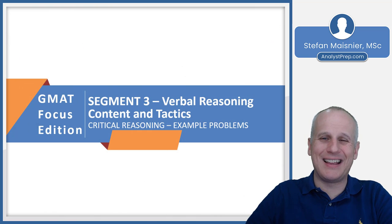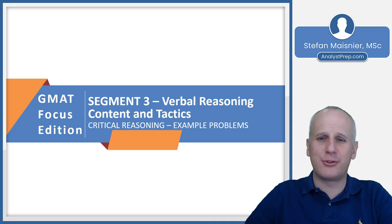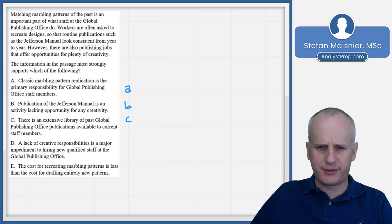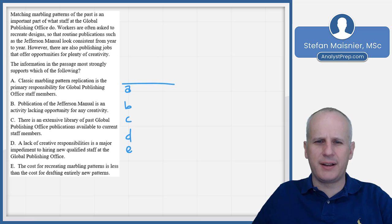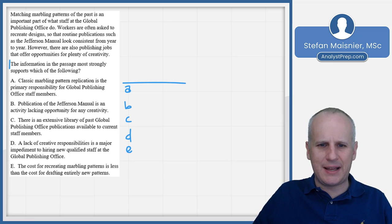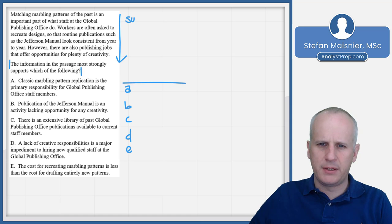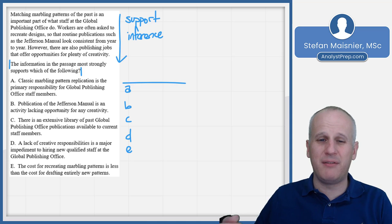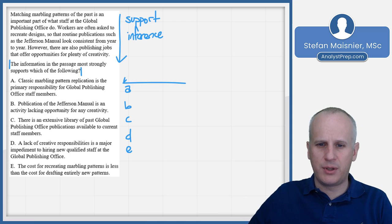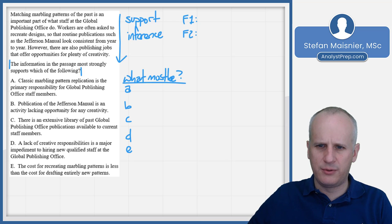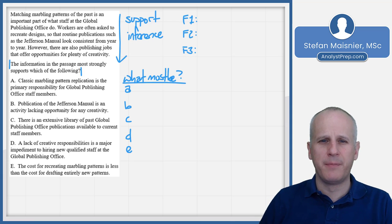Let's head to the whiteboard to see how to engage with both an inference and an argument task using scratch work. We set up our scratchpad first with answer choices A, B, C, D, E and a line over top. We read the question stem: 'The information in the passage most strongly supports which of the following.' Since the direction of support goes down — the statements above support a conclusion below in the choices — we know this is an inference task, a 'what must be' style question. We'll have some statements of facts: the matching marbling patterns of the past is an important part of what staff at the global publishing office do.